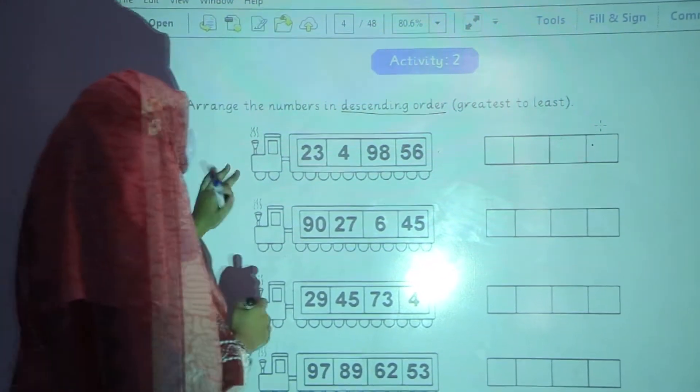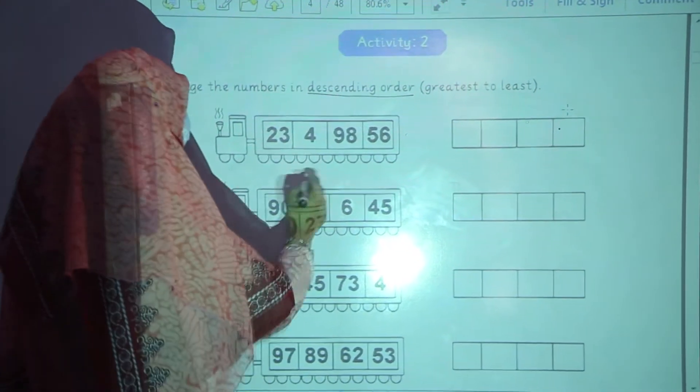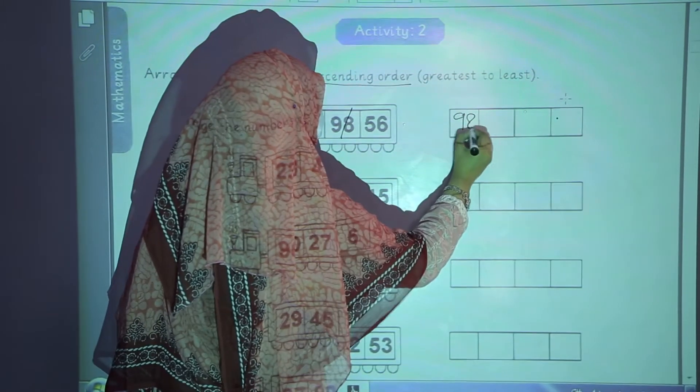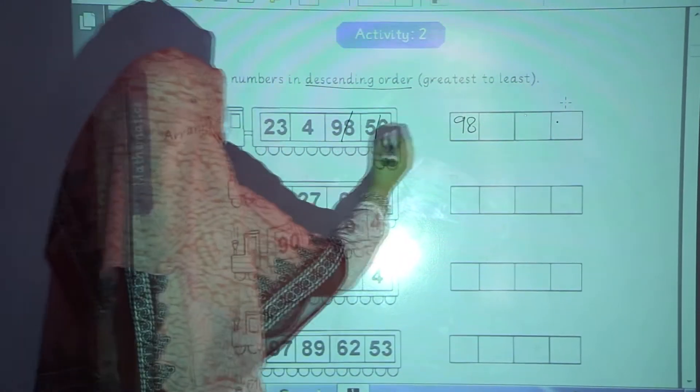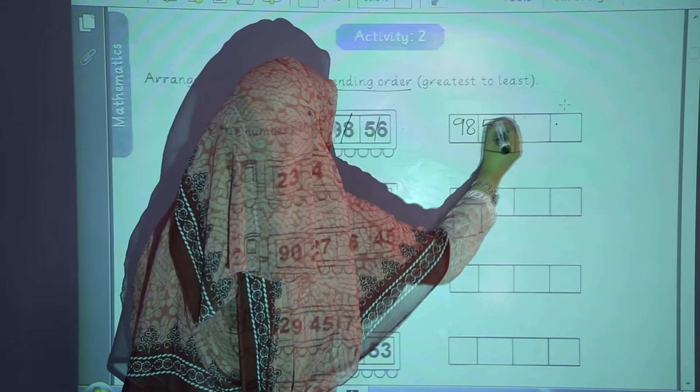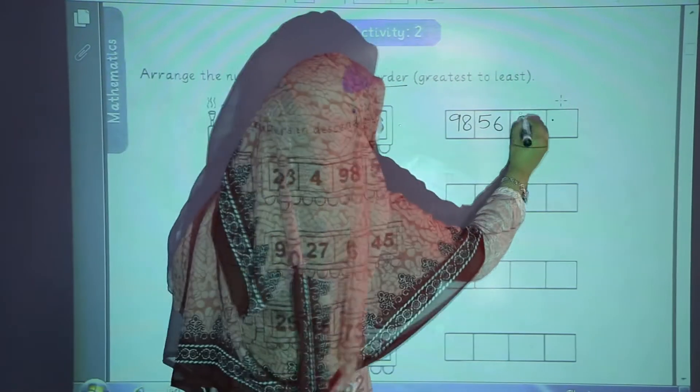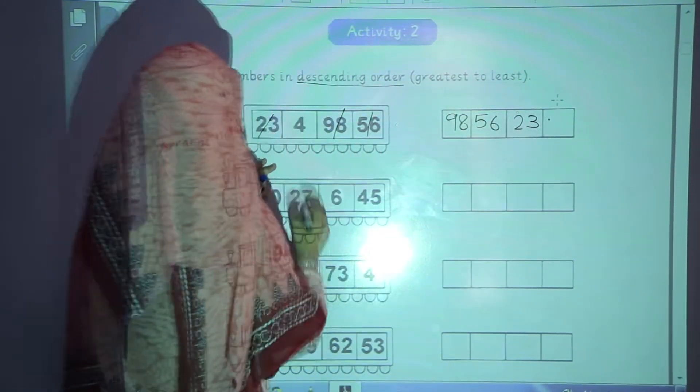Starting it from question number 1. Which one is the greatest number? 98. You will write 98 in the first box. After 98, 56 in the second box. After 56, 23 in the third box. And then 4.